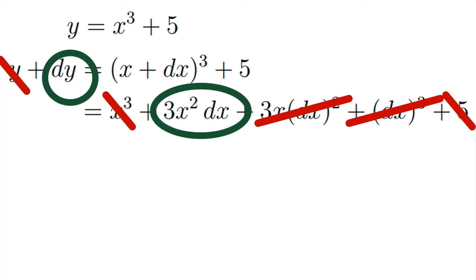Bring the dx on the right over to the left, and now we've got dy by dx equals 3x squared, which is exactly what we would have gotten if we had just started with y equals x cubed.